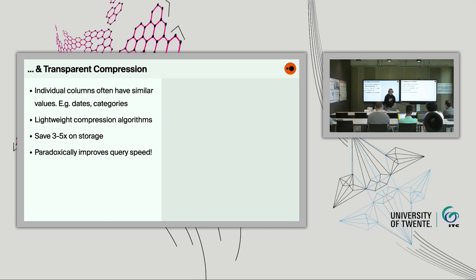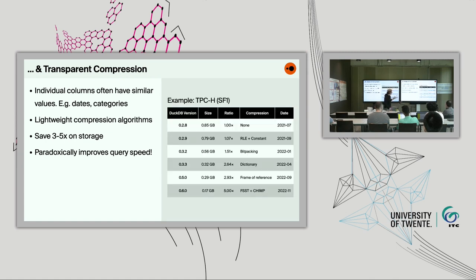Another good thing about columnar format is that DuckDB applies transparent compression. Individual columns often have very similar values and share a distribution, so DuckDB applies lightweight compression algorithms transparently, which can reduce storage by three to five times. Paradoxically, this also improves query speed — even though you're doing more work to compress and decompress, you're not bottlenecked by your CPU when pulling data from disk, you're bottlenecked by your disk. Here's a graph showing how storage algorithms improved across DuckDB versions, reducing a 0.5 gigabyte database file down to 0.17.